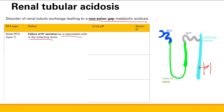In distal RTA, will urine pH be high or low? It's going to be higher than normal — greater than 5.5 — because you're not getting H-plus into the urine so it's not acidified. What will serum potassium be? Remember, sodium has to get reabsorbed, but if H-plus secretion isn't happening, you have to kick out potassium instead. So you get decreased serum potassium — hypokalemia — because you're exchanging potassium out since you can't exchange H-plus.